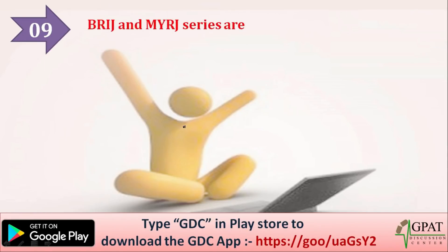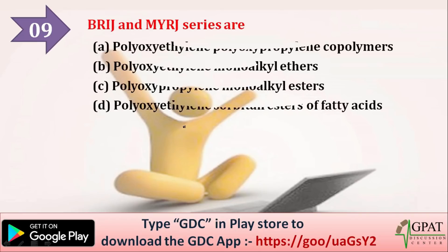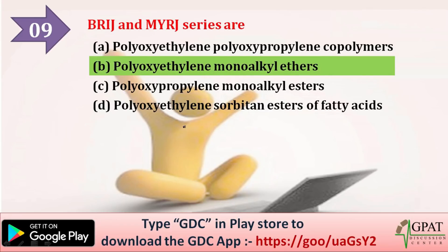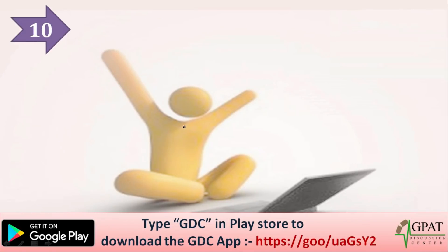Next question: Brij and Myrj series are? Option A: polyoxyethylene polyoxypropylene co-polymers. Option B: polyoxyethylene monoalkyl ethers. Option C: polyoxypropylene monoalkyl esters. Option D: polyoxyethylene sorbitan esters of fatty acid. The correct answer is polyoxyethylene monoalkyl ethers. The next question: Dragendorff reagent is?